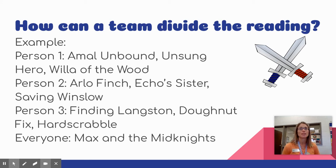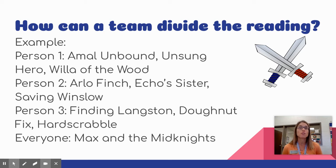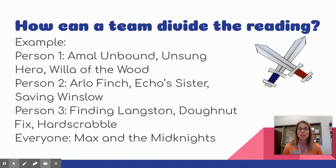So how can you divide up the reading? Here's one example. You can look at the books, look at how long they are, and decide what would be a fair way so that you're each reading about the same amount of material. Person one might read Amel Unbound, Unsung Hero of Birdsong USA, and Willow of the Wood. Person two might read Arlo Finch, Echo's Sister, and Saving Winslet. The third person might read Finding Langston, Donut Fix, and Hard Scrabble. That's nine books.